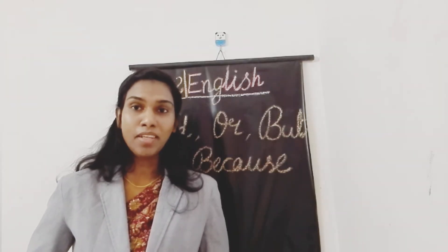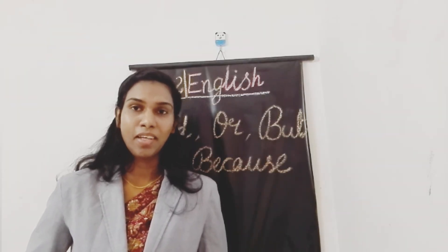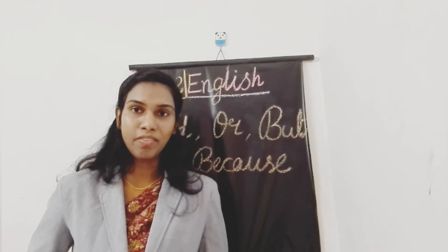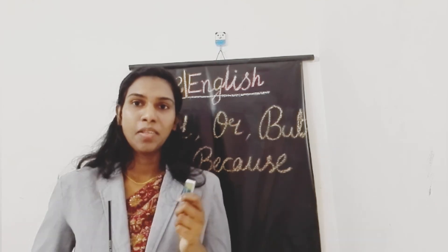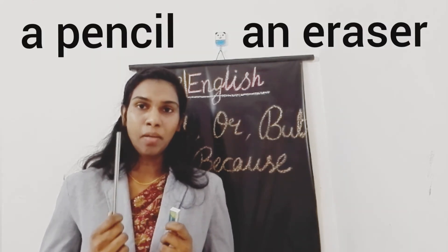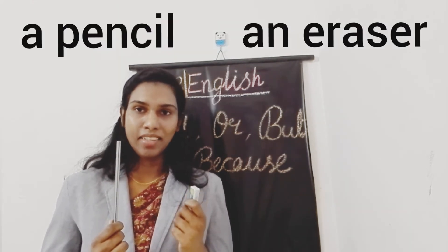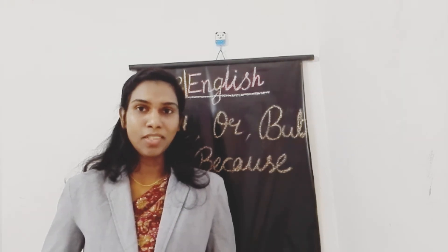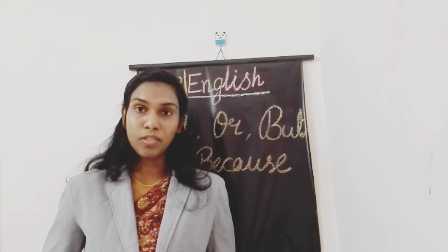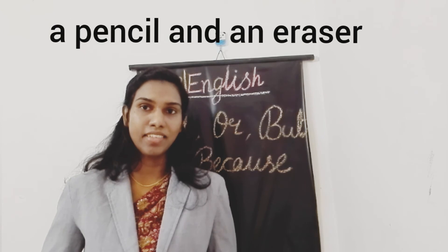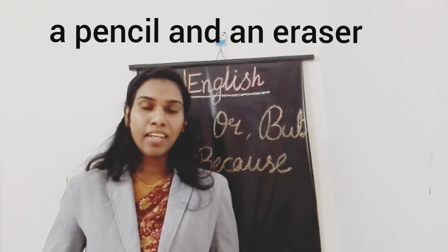Now let's see the use of these words. First of all, let's see the use of 'and.' Okay, now look at these objects: a pencil, an eraser. So to join these words together, we can use the word 'and.' For example, a pencil and an eraser.